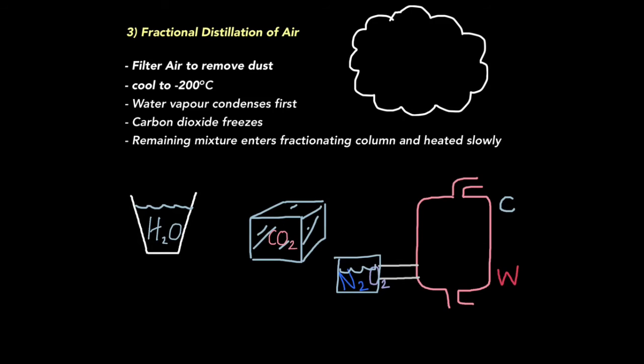We then slowly heat them up so these gases enter the fractionating column. A fractionating column is a large chamber, where at the top there's a cooler temperature and a warmer temperature at the bottom. So nitrogen and oxygen enter. Due to their separate boiling points and the fact there's a temperature gradient in this fractionating column, they basically separate out, so nitrogen will come off here and oxygen here.